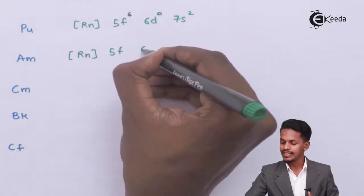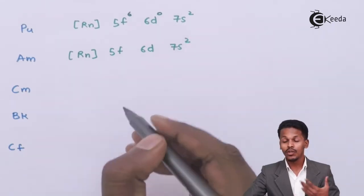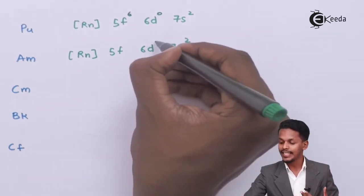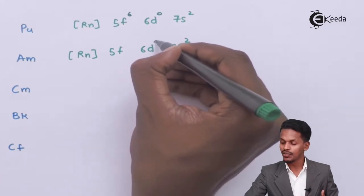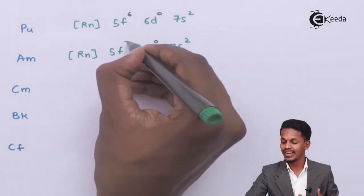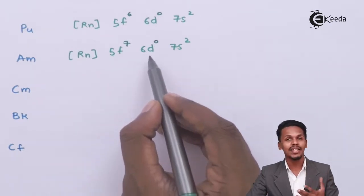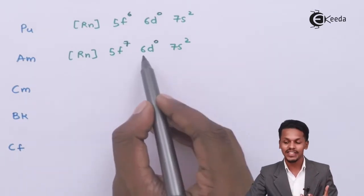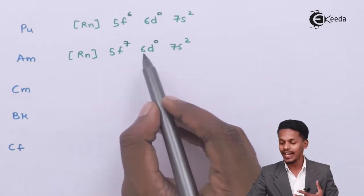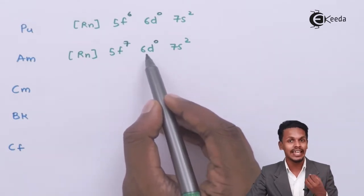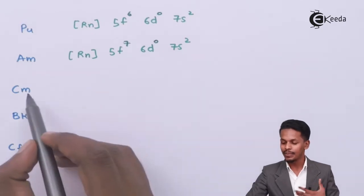For americium, the electronic configuration is [Rn] 5f⁷ 6d⁰ 7s². The d orbital has zero electrons and the f orbital has seven electrons. Both the 5f and 6d orbitals are stable here because 5f is half-filled with seven electrons and 6d is empty.